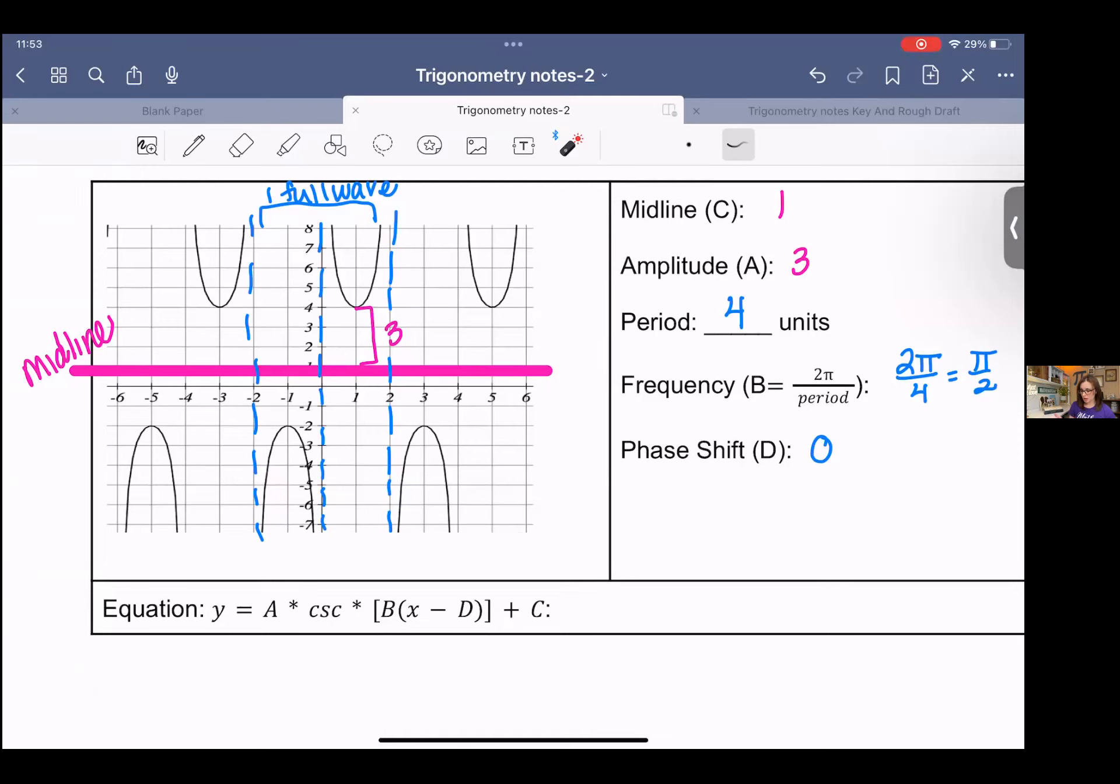And then if we were to write an equation for this function, since it's cosecant, I'm using cosecant. And then now we just plug in all the pieces. Amplitude goes in the front. I'm going to do Y equals three cosecant. And then frequency goes next. Two pi over four or pi over two times X. I had no phase shift and that was it. Nope. Plus one. Sorry. I was like, there was a vertical shift on this one. The midline was plus one. So you could do parentheses here and then the plus one outside. Or we could write this as one plus three cosecant two pi over four X or pi over two X.